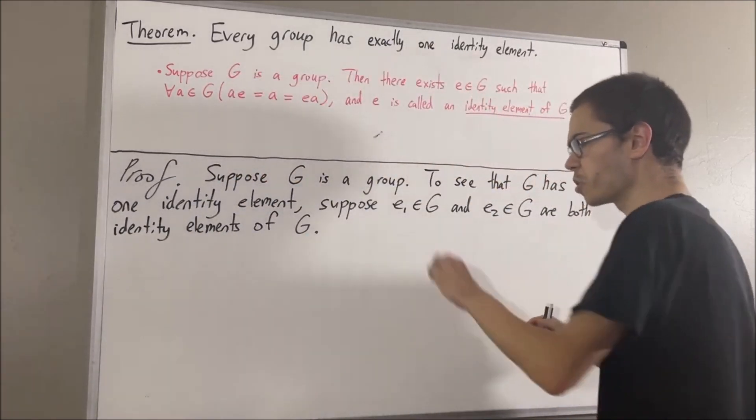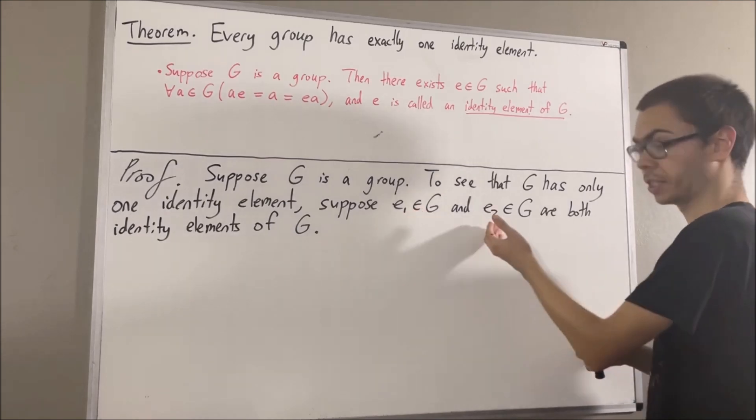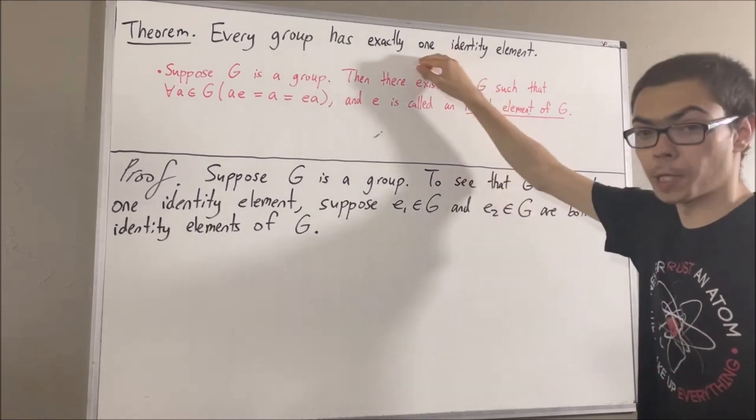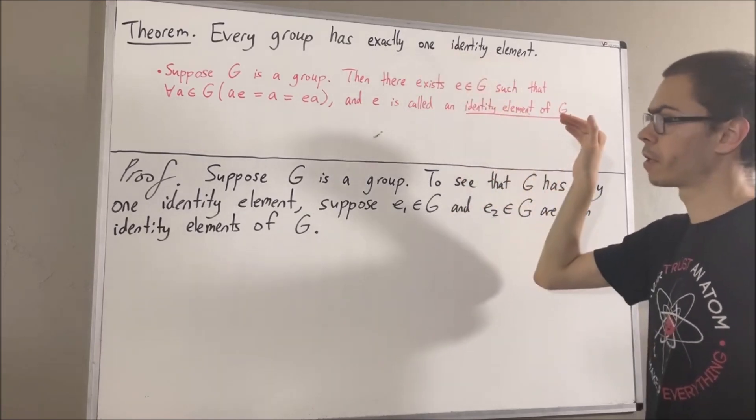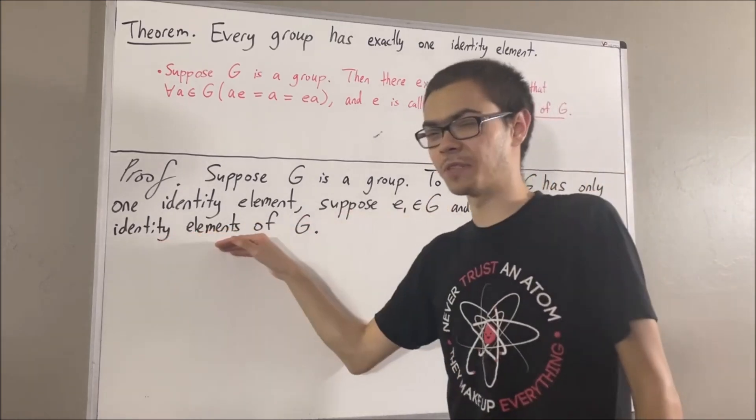The whole goal from here is to show that e1 is equal to e2. If we can show e1 is equal to e2, then that will prove that G can only have one identity element. Now, to start, what does it mean for e1 and e2 to be identity elements of G?